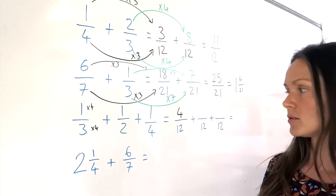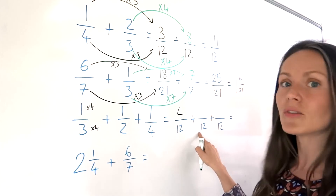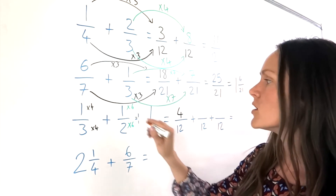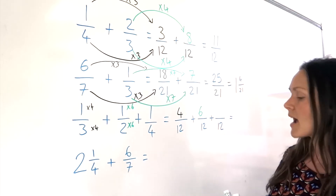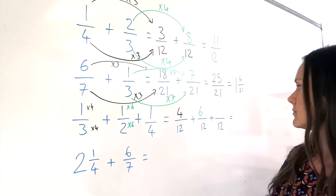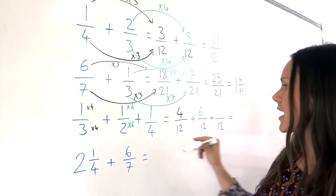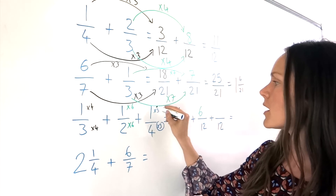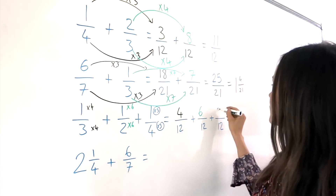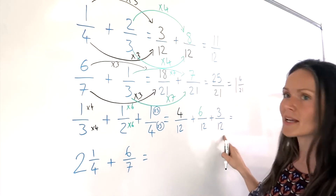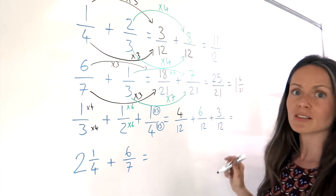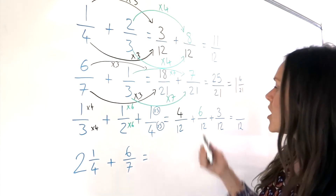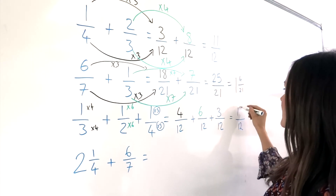For the second fraction, to get from 2 to 12, I must multiply by 6. So I do the same with the numerator and multiply by 6. So 1 times 6 is 6. And now the last fraction — to get from 4 to 12, I have to multiply by 3. So I'm going to do the same with the numerator and multiply by 3. So 1 times 3 is 3. Now that I've got common denominators, I can add all three fractions together. Remember, the denominator stays the same — it's just the numerators that we're adding together. So 4 plus 6 plus 3 gives me 13.